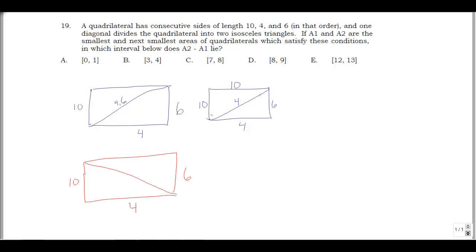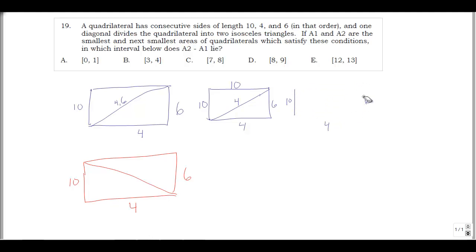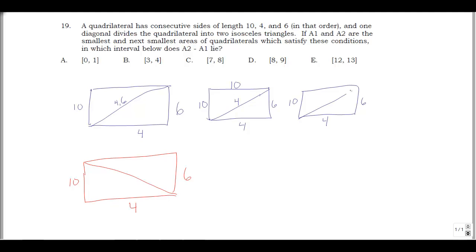So that's one possible quadrilateral. Another option: if the diagonal is 6, then the upper left triangle can have a 10 to give us 10, 10, 6. Or we can put a 6 there as well, giving 6, 4, 6, 10 — because 6 plus 6 is 12, which is bigger than 10. You couldn't use 4 plus 4, because that's only 8, less than 10. So we get three options from this diagonal direction.